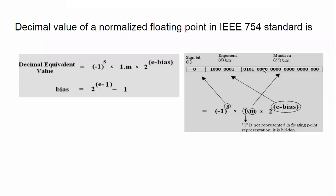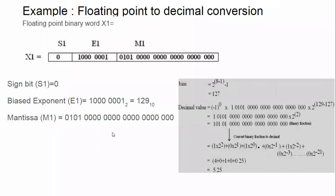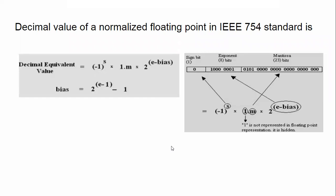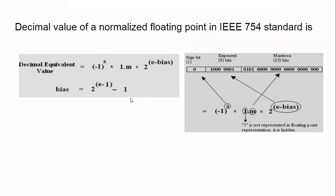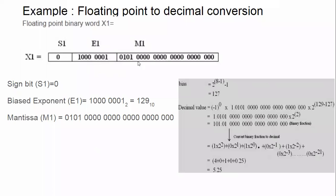Now let us look at an example. Given a floating point number, we identify the sign bit, exponent part, and mantissa part. The sign bit is zero. We write it in the form (-1)^0 × (1.m) × 2^(e - 127). We substitute the mantissa portion and find the exponent value e, then subtract 127. We then look at floating point to decimal conversion.